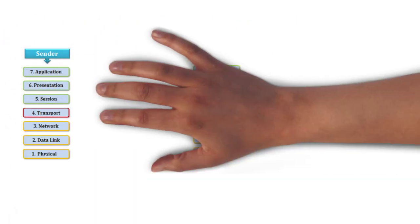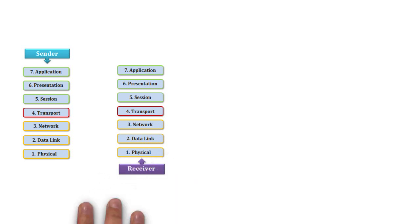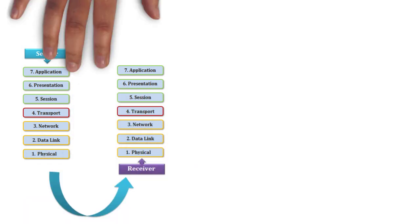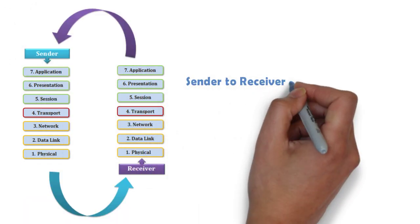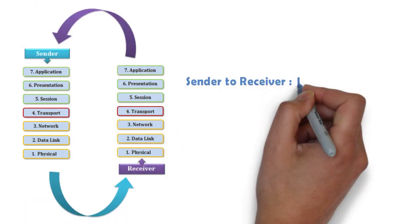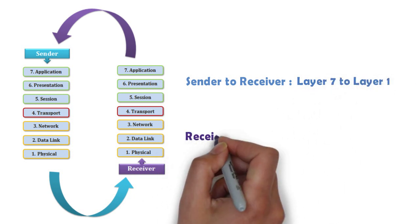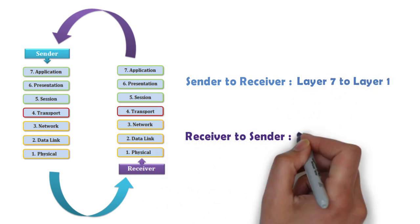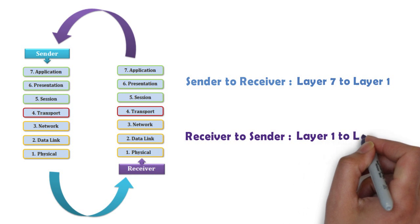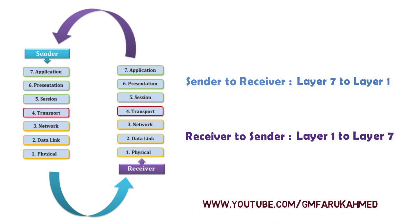To better understand, you need to know whether the flow is top-down or bottom-up. It is continuously running in a loop: sender to receiver is layer 7 to layer 1, and receiver to sender is layer 1 to layer 7.